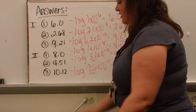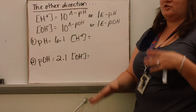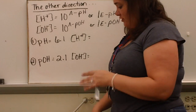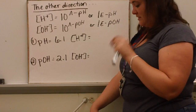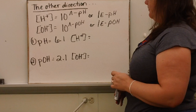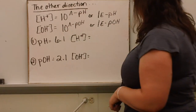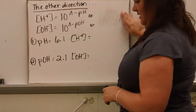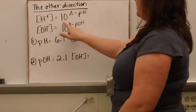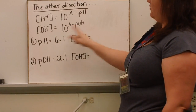Next, we're going the other direction — calculating the concentration from pH or pOH. You use the inverse log, which is 10 to the x. On your graphing calculator, that's the second function button and then log. You'll do second function, log, and then enter the negative pH to find hydrogen concentration, or 10 to the negative pOH for hydroxide concentration.